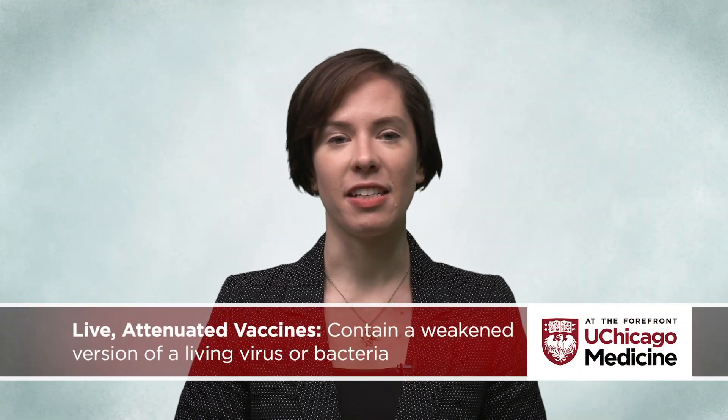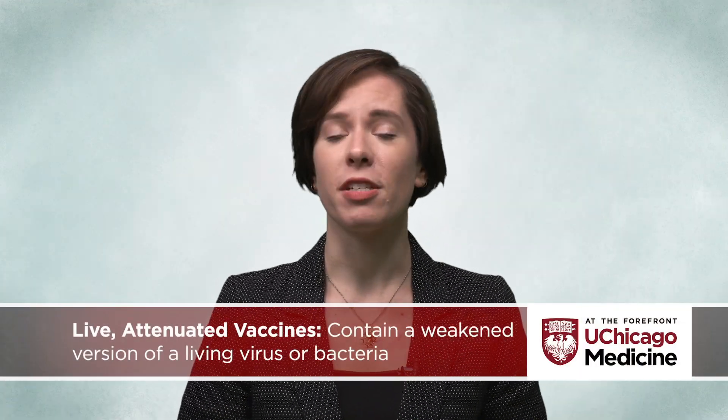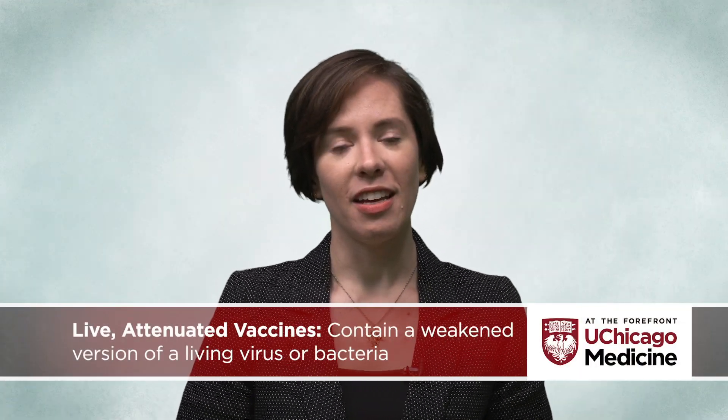Live attenuated vaccines are the closest to a natural infection. They contain a weakened version of a living virus or bacteria. These types of vaccines teach your immune system what the infection might look like without causing a severe illness. But because these vaccines contain living pathogens, they can't be given to people with weak immune systems. The MMR and chickenpox vaccines are examples of live attenuated vaccines.